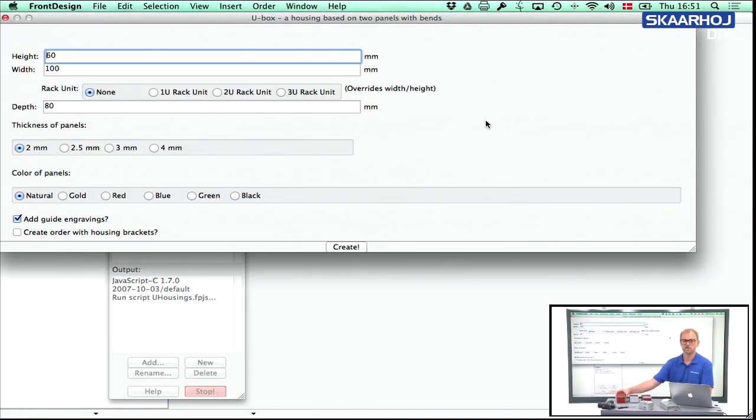So this box that I made here is actually based on the standard settings from here. So what you see is we can just go with these dimensions. I think it's a 2.5 millimeter. It was red and create order with housing brackets. Yeah, why not?